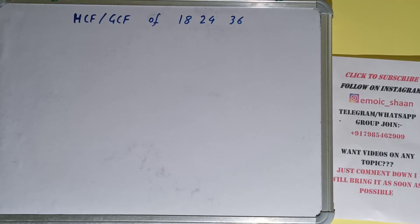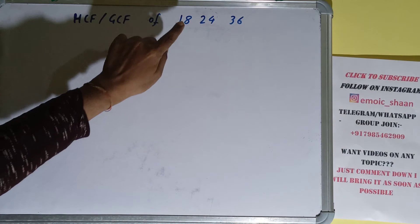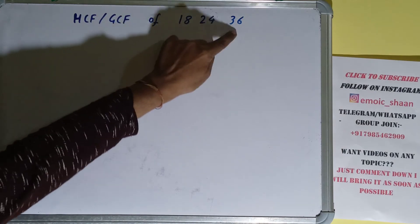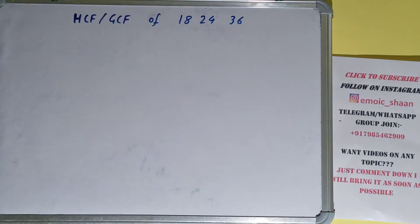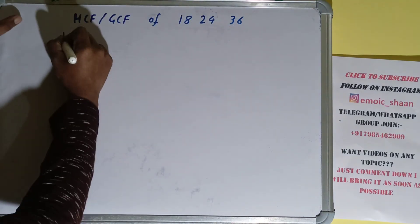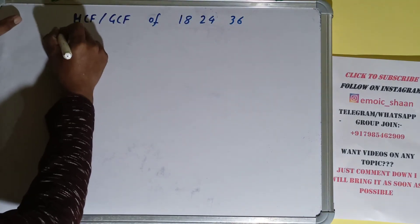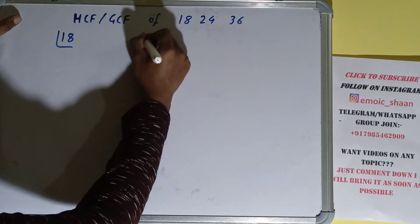Hello friends! In this video I'll be helping you with the HCF, or GCF, of the numbers 18, 24, and 36. To find it, we first need to write each of the numbers separately and prime factorize each of them.